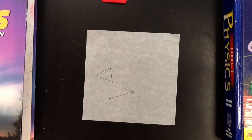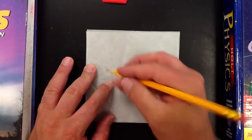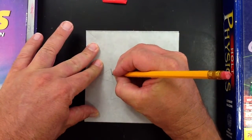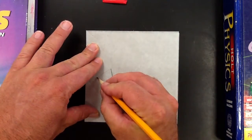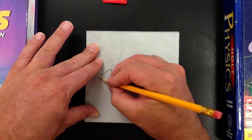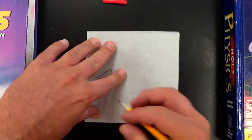So now we take another piece of patty paper, put it on top, and trace exactly what we have there underneath. So trace the other triangle. It would be better if you actually did it with a straight edge, but it's hard to get a straight edge underneath here. And trace the other dots.